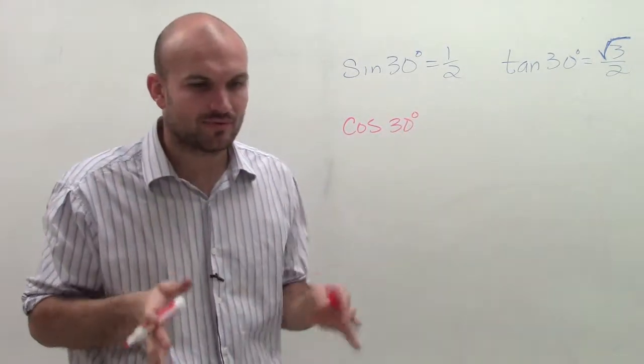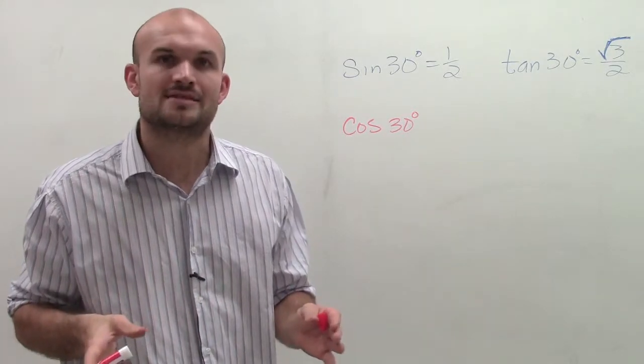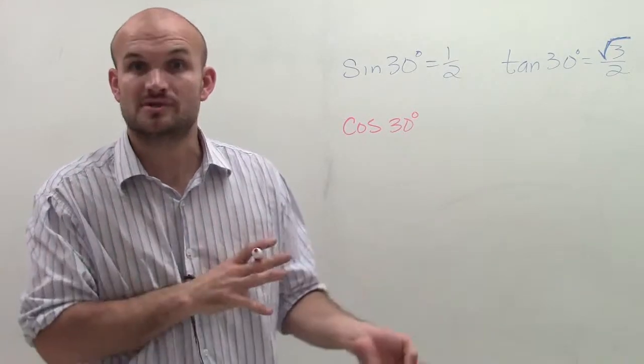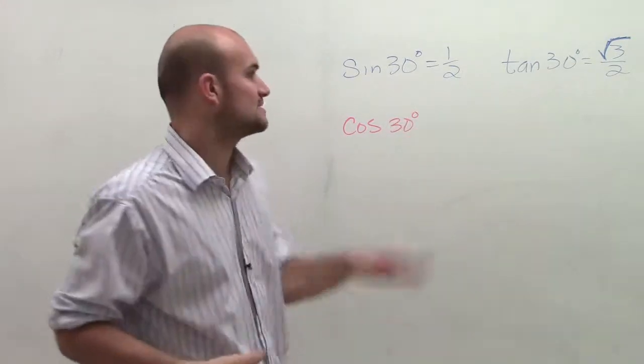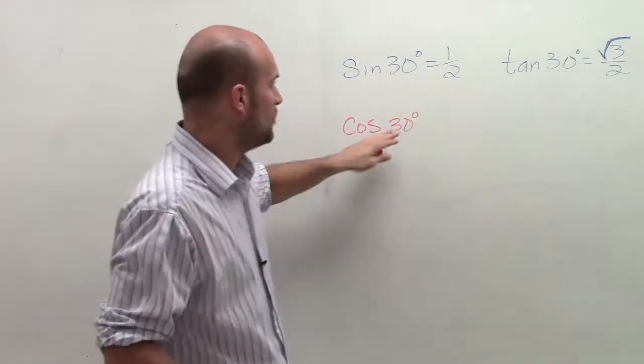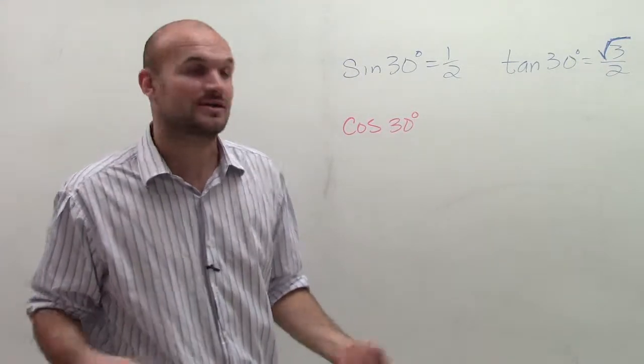Now remember, in other problems, what we've talked about so far is looking at reciprocal identities, seeing if we could use the reciprocal. And then also, we looked at co-function identities. Well, given my information, to help us evaluate for cosine of 30 degrees, none of those are going to work for us.